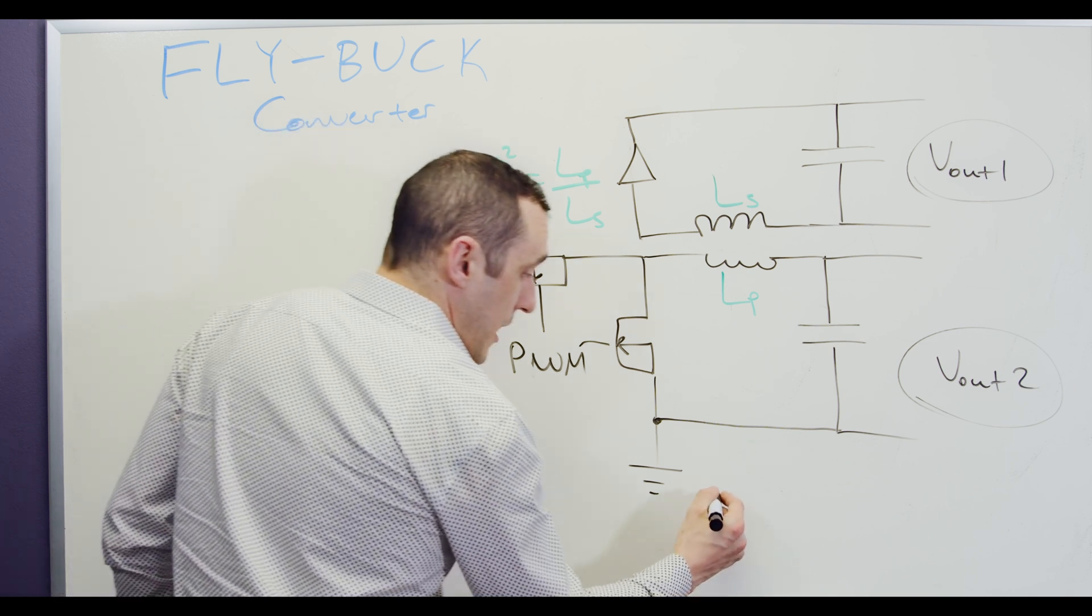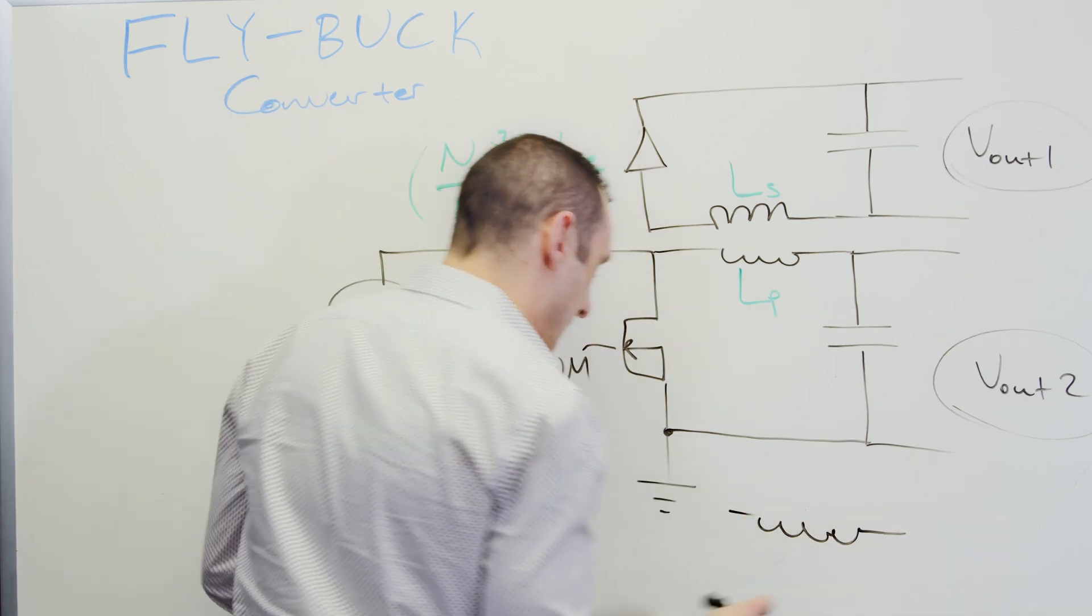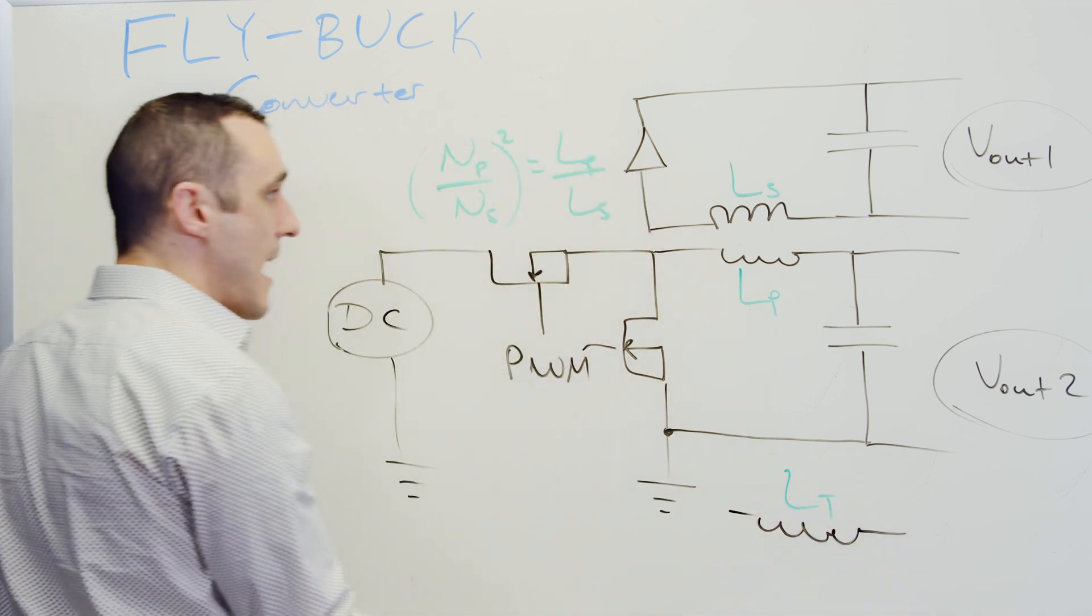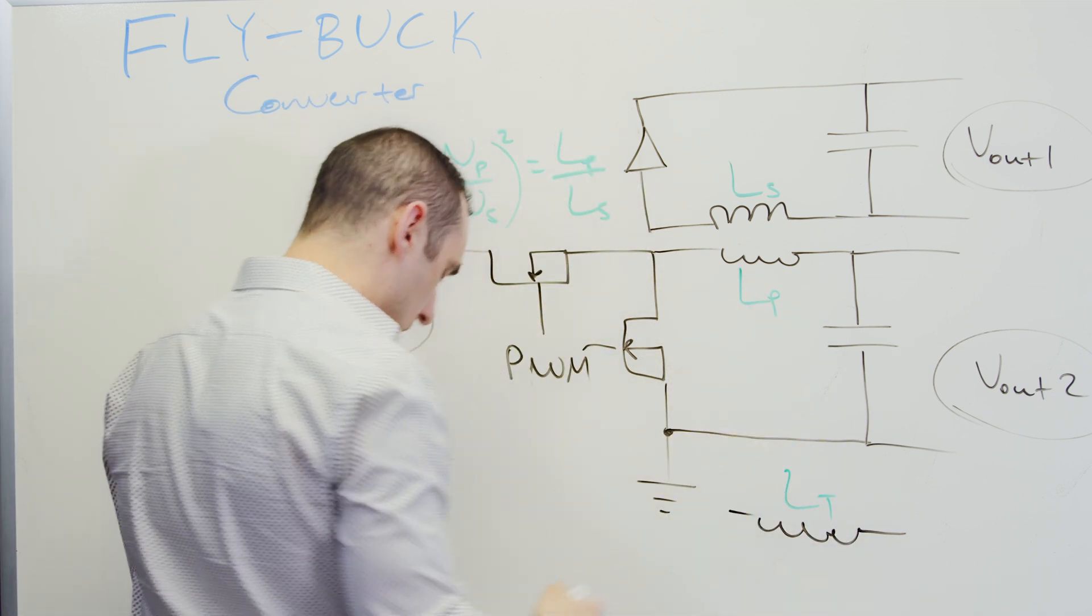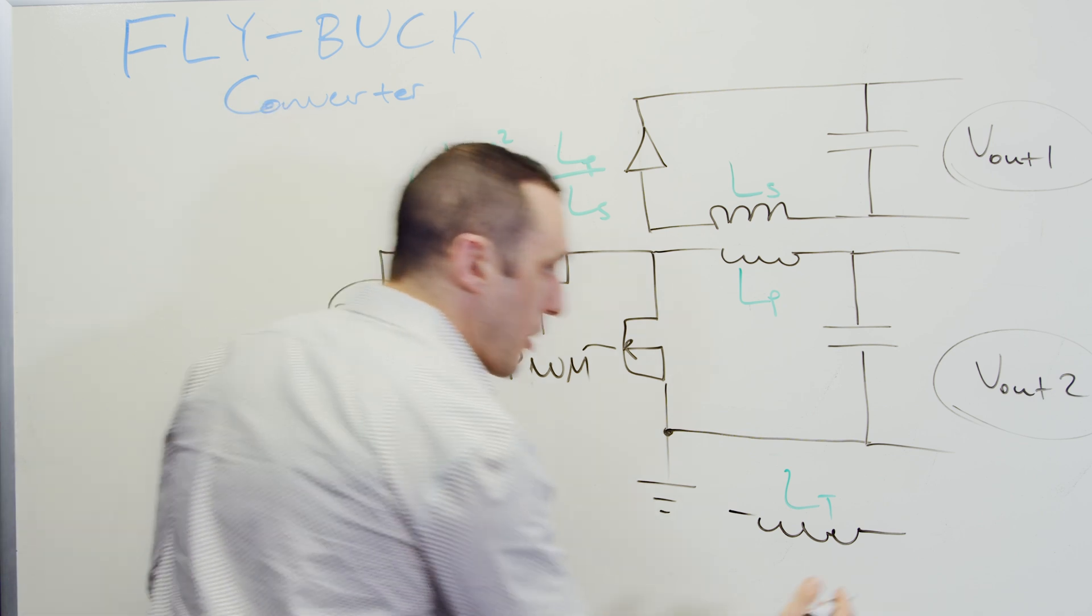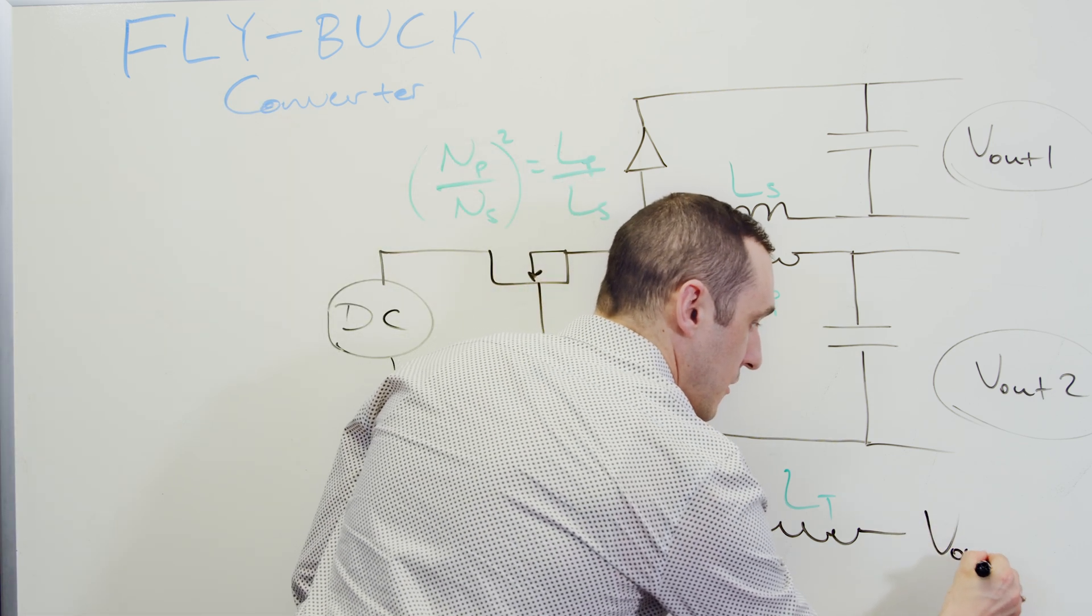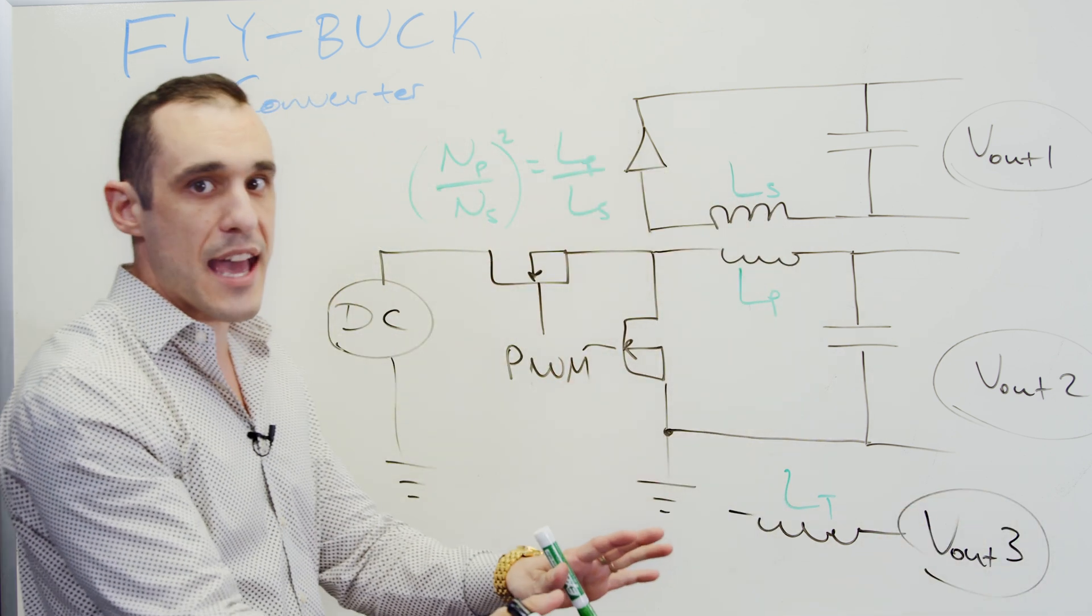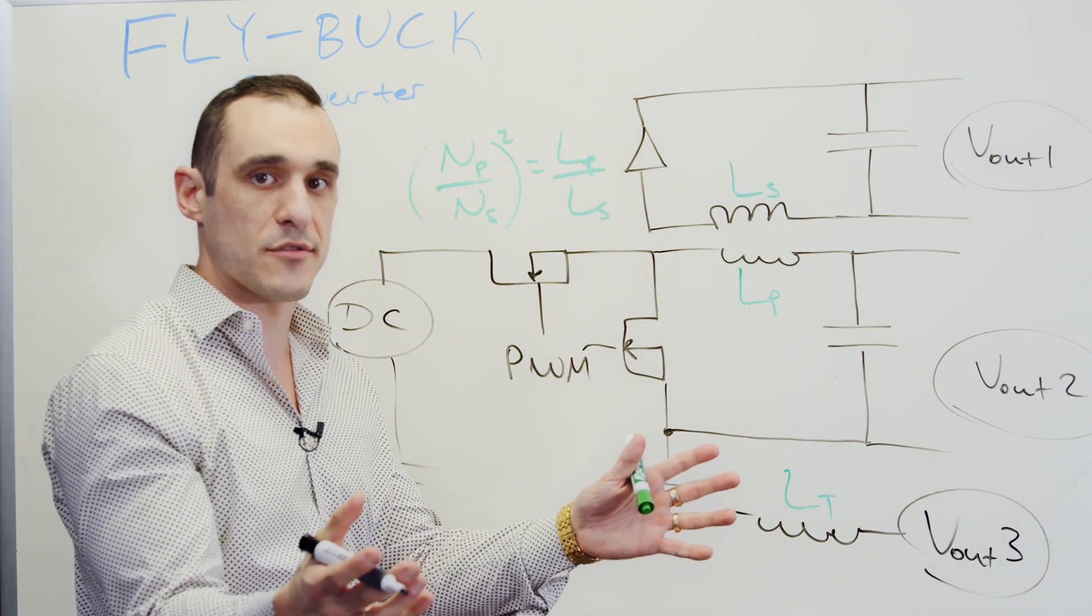So here you could have a third rail which has another inductance, L sub T, and now the ratio of LP to LT is going to determine the value of this output voltage, V out three. So I can have as many rails as I like or as I can possibly fit into this transformer.